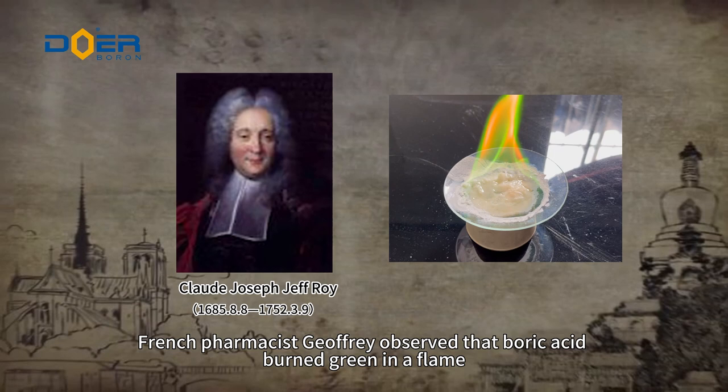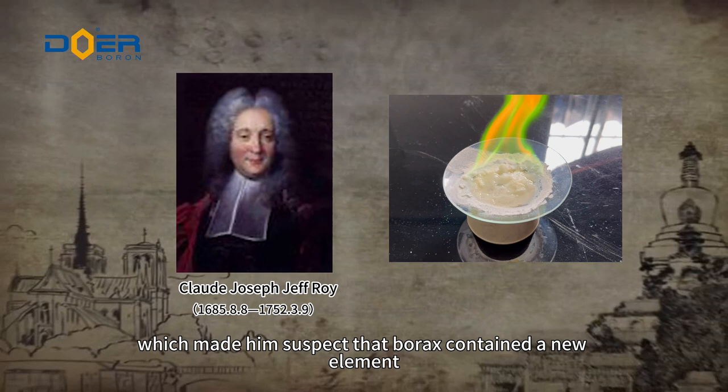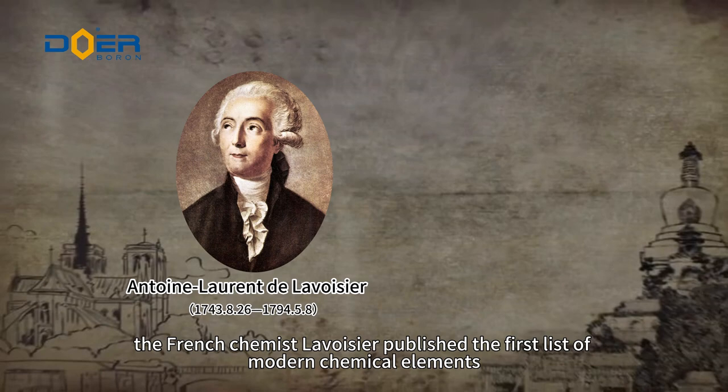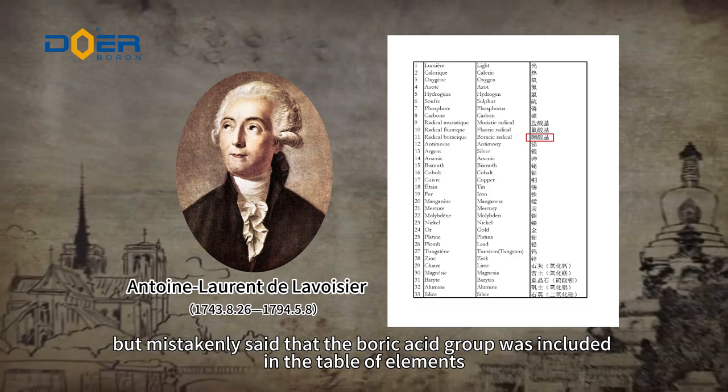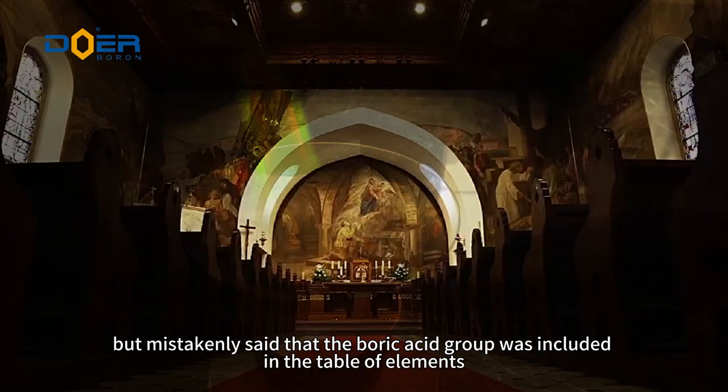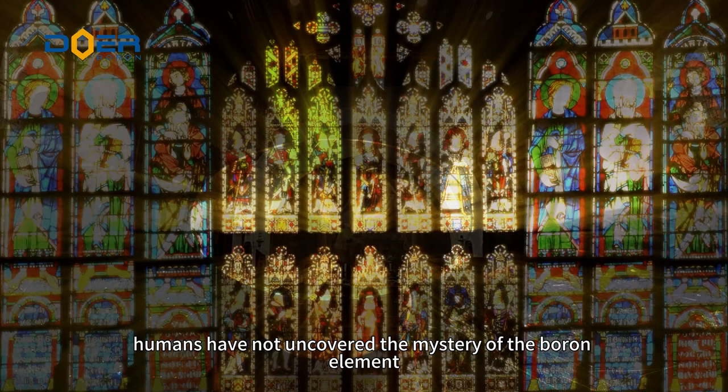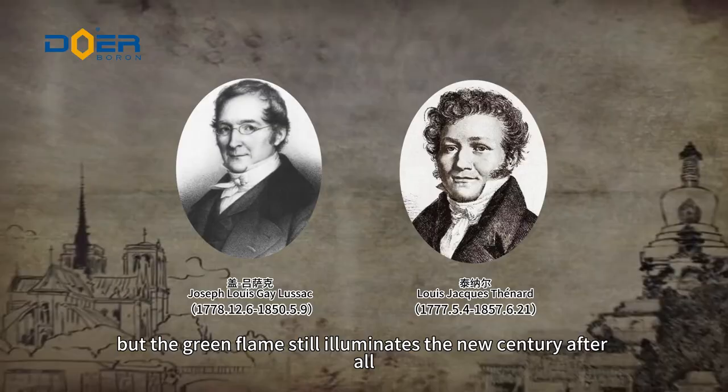But because there was no other evidence, his idea could not be confirmed. In 1789, the French chemist Lavoisier published the first list of modern chemical elements; however, he did not label the boron element but mistakenly included the boric acid group in the table. At this time, humans had not uncovered the mystery of boron, but the green flame still illuminated the new century.